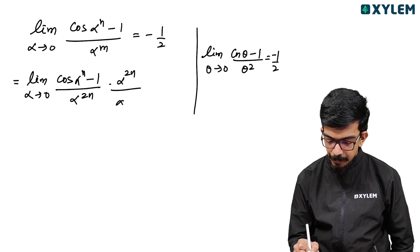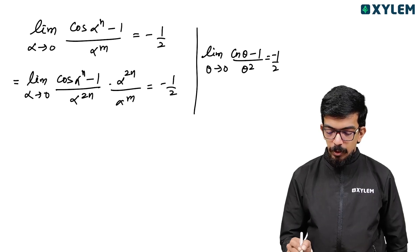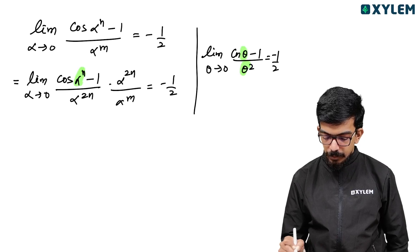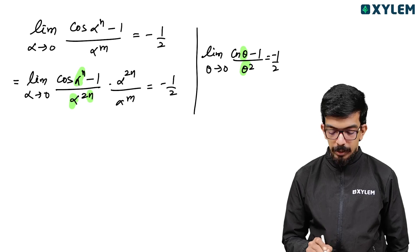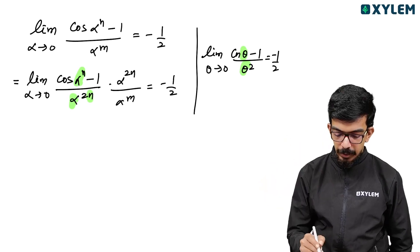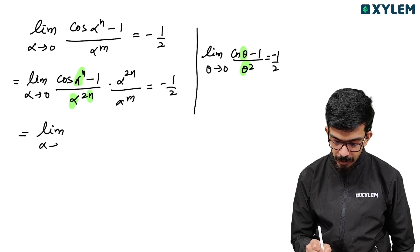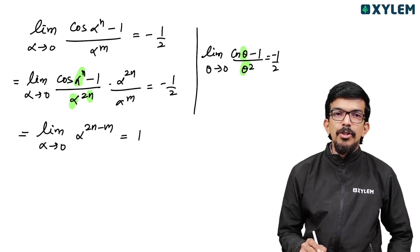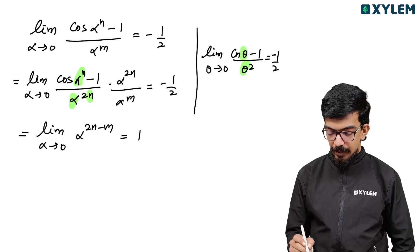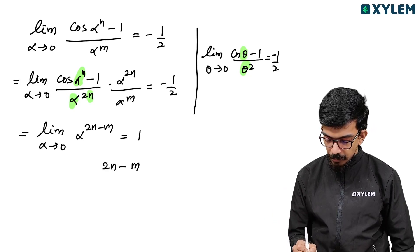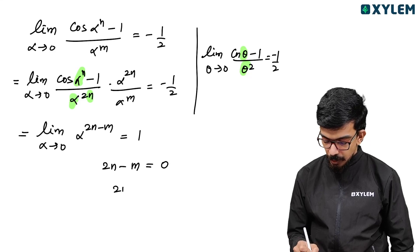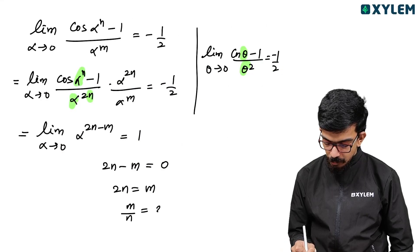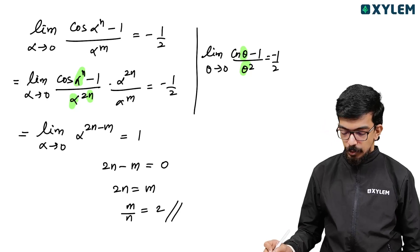Using the standard limit of cos(θ) minus 1 over θ squared equals minus 1 by 2, we substitute theta equals alpha^n. So we need limit of cos(alpha^n) minus 1 over alpha^(2n) equals minus 1 by 2, multiplied by alpha^(2n) over alpha^m. For the limit to be finite and nonzero, we require 2n minus m equals 0, so 2n equals m. Therefore m by n equals 2.